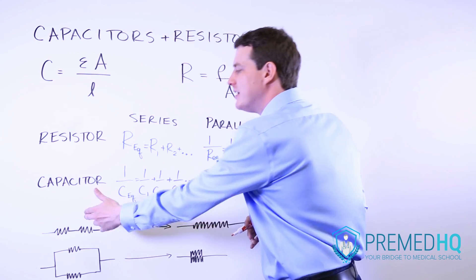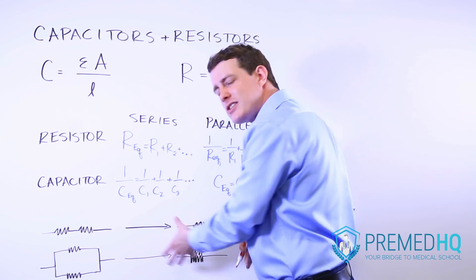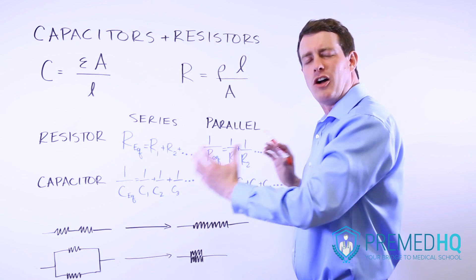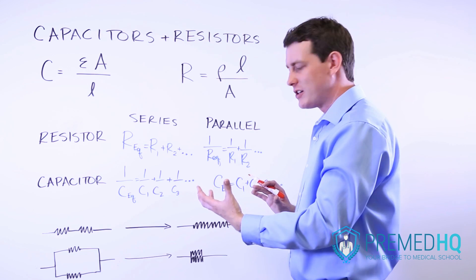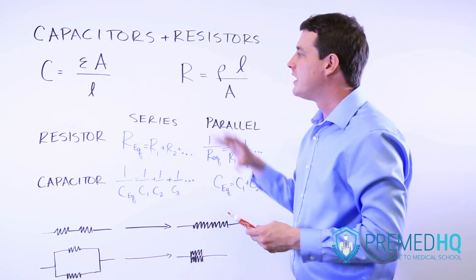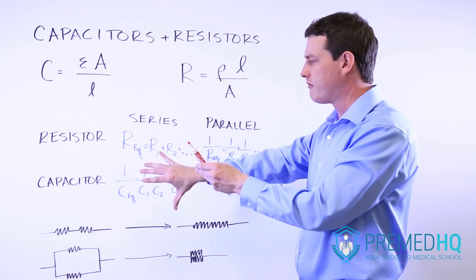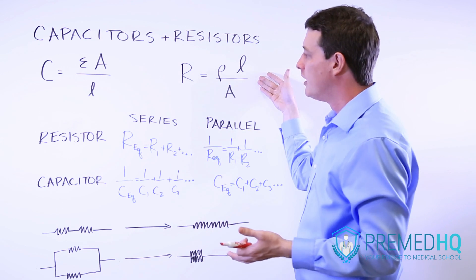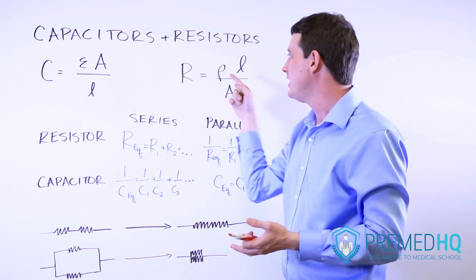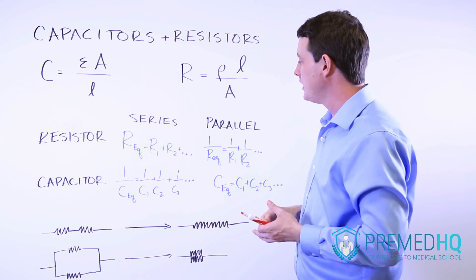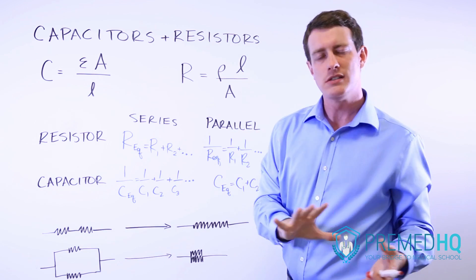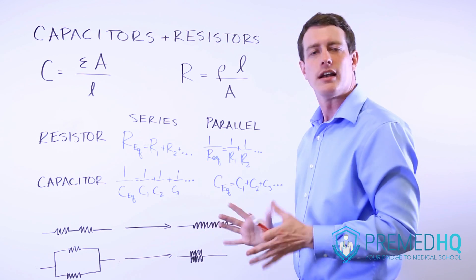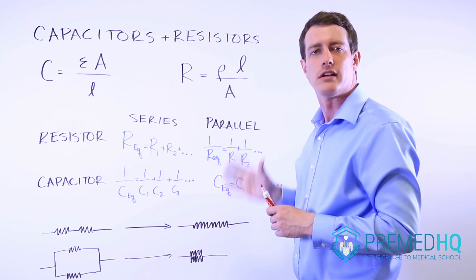The more you can see series and parallel setups this way — realizing it looks like a longer resistor or capacitor versus one with a greater surface area — the more all of these components fit together. From any one of these pieces you can derive all the other parts: the capacitance and resistance formulas using permittivity and resistivity, and what happens when you put them in series or in parallel. If you grasp this concept, a lot more of that becomes straightforward and everything else should follow.